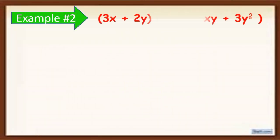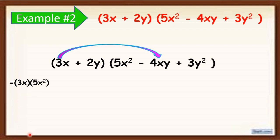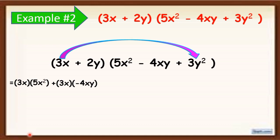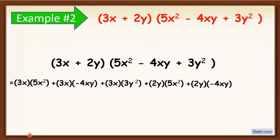Another example: (3x + 2y)(5x² − 4xy + 3y²). Again, we are going to multiply each term in the binomial to each term of the trinomial. So, multiply 3x times 5x squared, plus 3x times negative 4xy, plus 3x times 3y squared, plus 2y times 5x squared, plus 2y times negative 4xy, plus 2y times 3y squared.